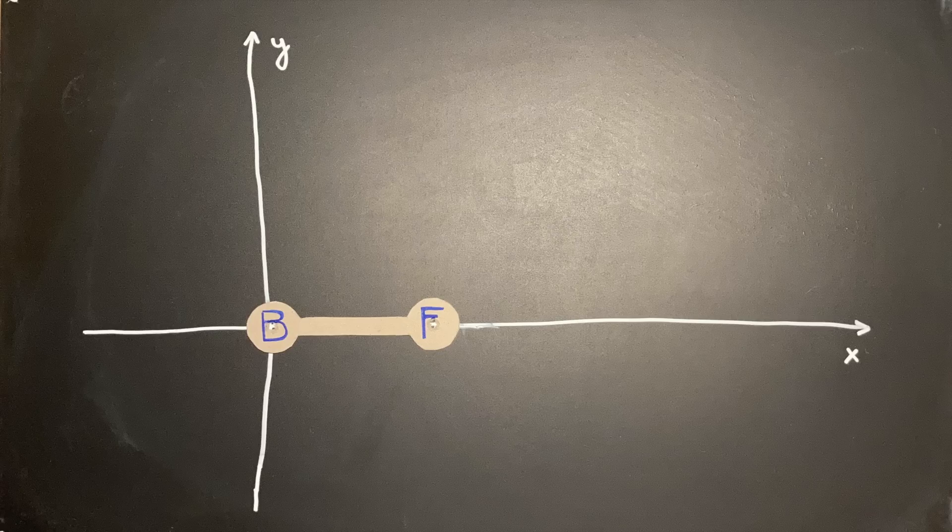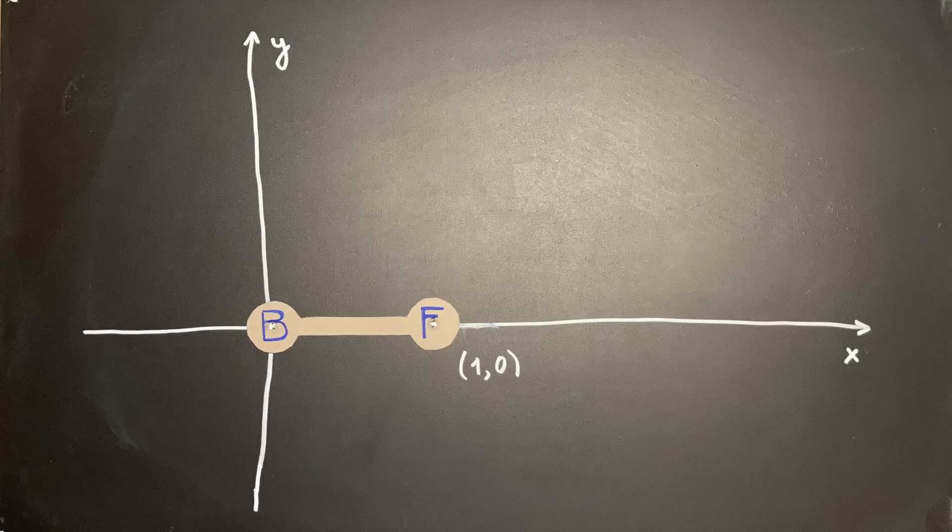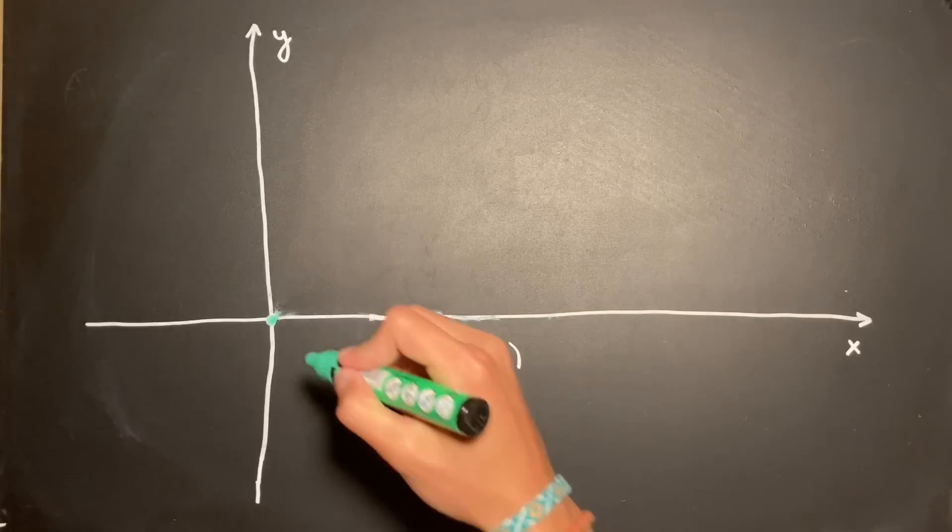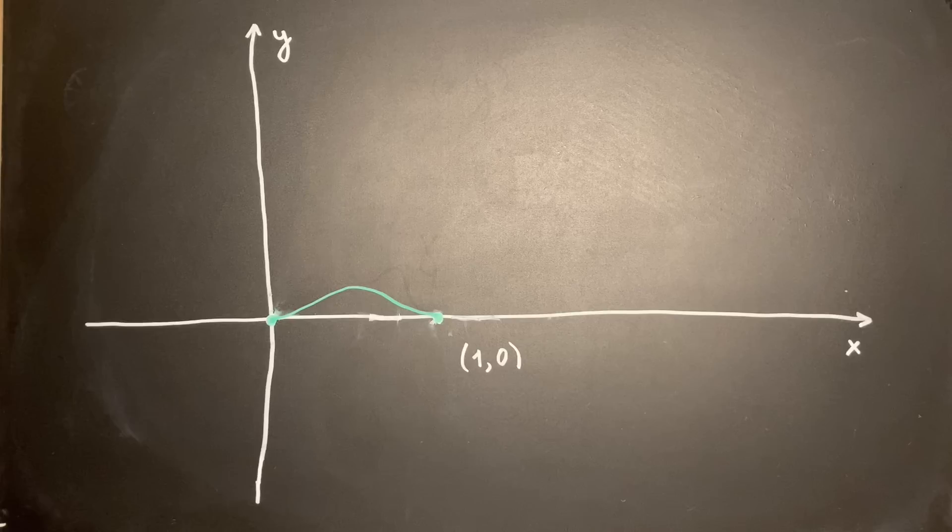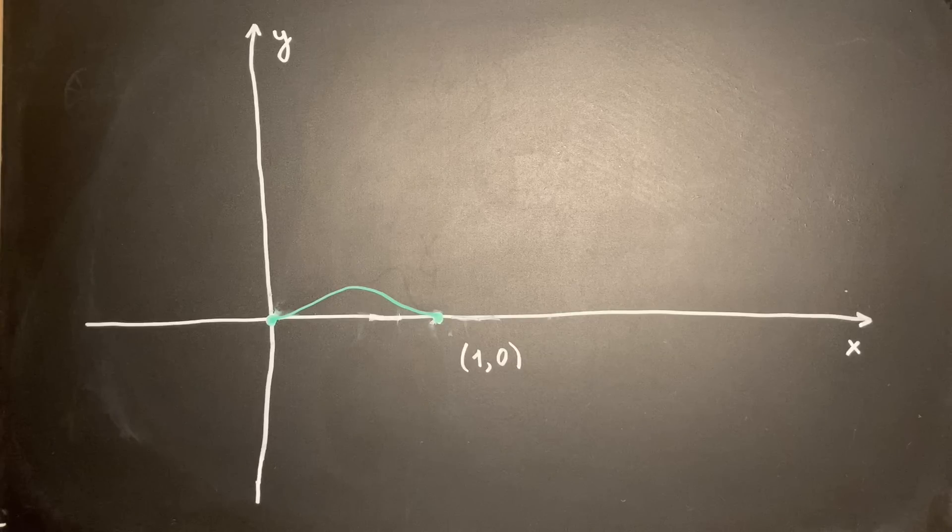For our construction, we begin with the bicycle's initial position. For our frame of reference, we add a coordinate plane so that point F falls onto the point (1,0) and point B falls onto the origin. Since we want the two tire tracks to coincide, the trajectory of point B has to pass through (1,0), the current position of point F.